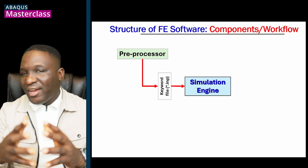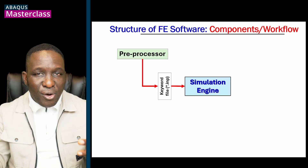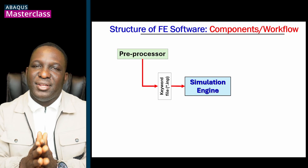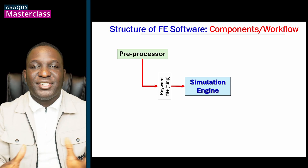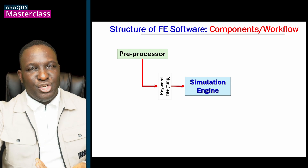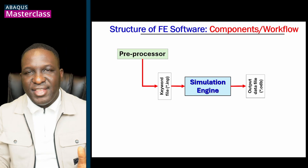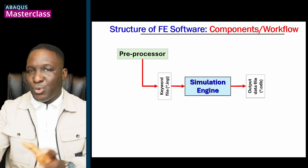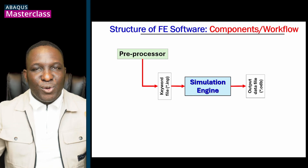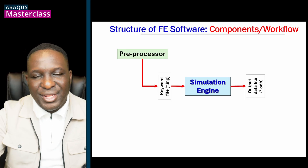The simulation engine is where the numerical implementation that we spoke about in the first video takes place — the whole set of numerical implementation that drives the finite element process, that drives the solution of partial differential equations. After crunching the numbers, what you get out is an output database file. Within Abacus this is called the start.odb file. It's basically a file that stores all the information from the numerical solutions obtained within the FE solver.